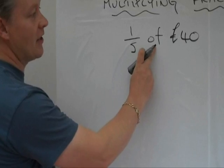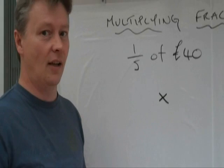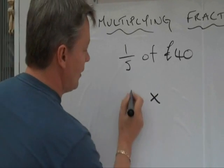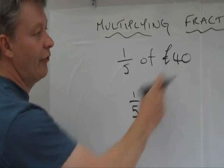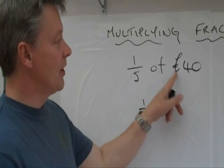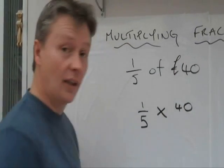Okay, well, wherever you see this 'of', it means multiply. So what I'm going to do is change that like that. And I'm going to leave that one-fifth like that. And that 40, I'm going to ignore the pound sign, and I'm just going to call it 40 like that.